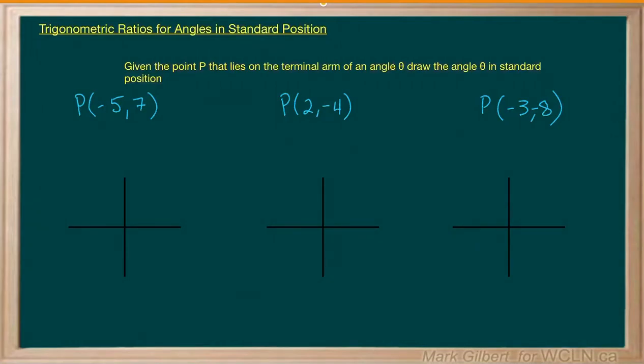All right, let's look at some examples of these points on terminal arms and the angles that they form. I've written a question out: given the point P that lies on the terminal arm of an angle theta in standard position, draw the angle. So let's look at this. Let's start with this one here, call it problem 1, and let's plot this point.